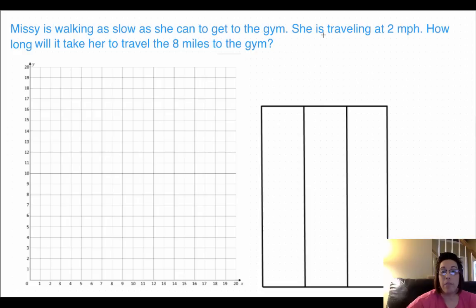Okay, so let's look at Missy. She's traveling two miles per hour. We want to know how long, so we're going to label that X and Y. So X is going to be our hours. So at zero hours, she travels zero miles. After one hour, she's traveled two miles.